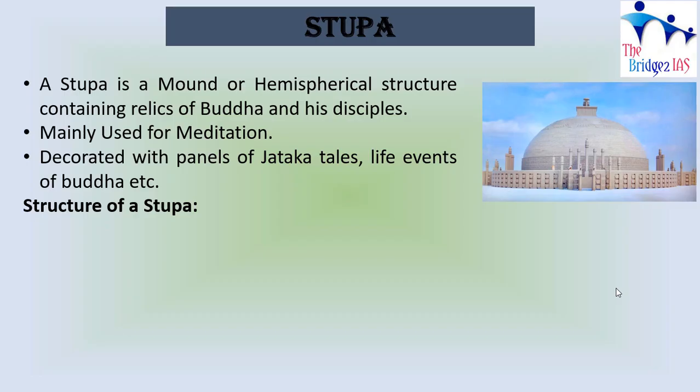So what is a stupa? Simply, a stupa is a hemispherical structure that contains relics of Buddha and his disciples. Some of the bodhisattvas — persons who have attained their enlightenment but are stopping their death, which is called Mahaparinibbana in Buddhism, in order to guide others to their enlightenment — such people's relics are kept in these hemispherical mounds which are called stupas.